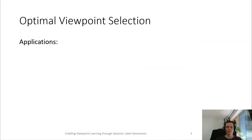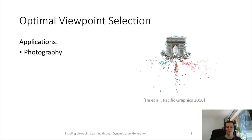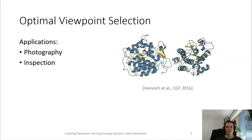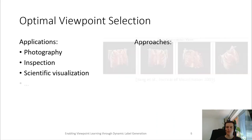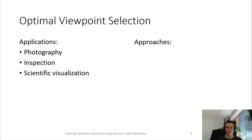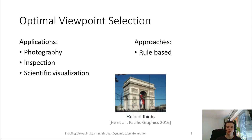Finding good views has applications in many different fields. They range from finding vantage points for capturing stills in architecture to initial camera placement when trying to inspect complex objects or scenes to viewpoint recommendations in scientific visualizations. To determine good views, different approaches have been proposed. Early work was often rule-based, such as the rule of thirds or the golden ratio.